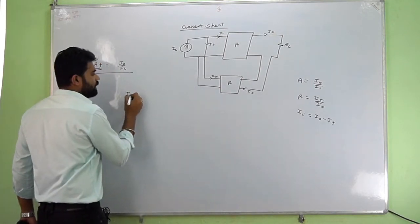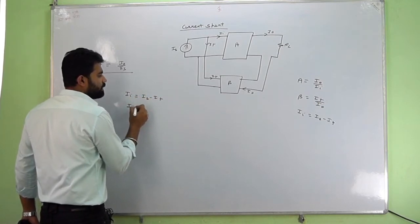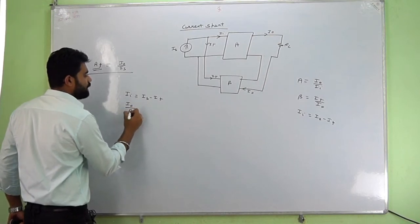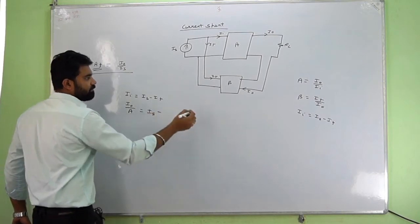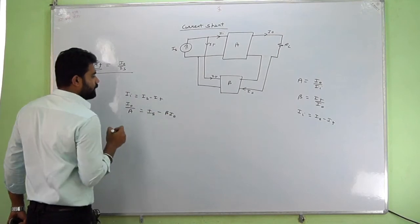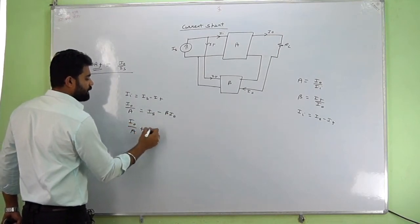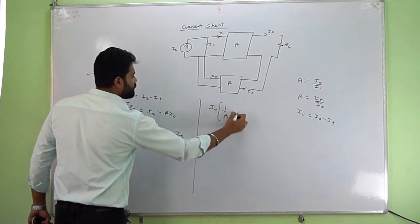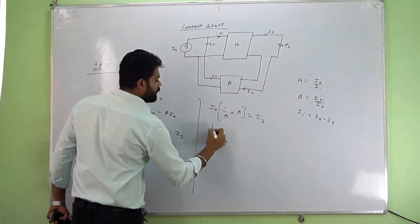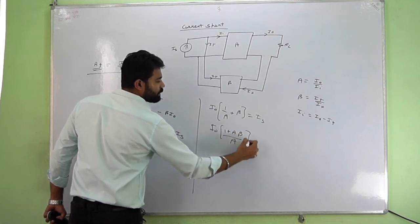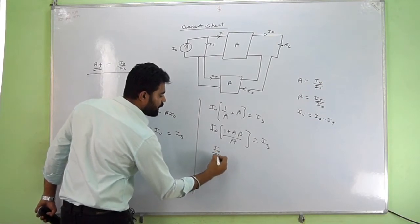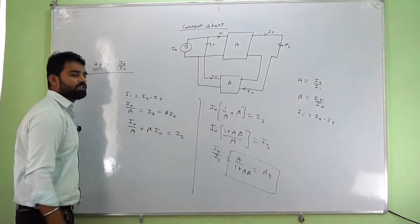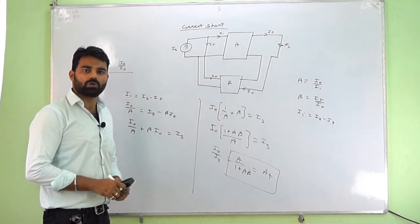We'll start with the equation II equal to IS minus IF. II can be replaced as I-naught upon A, equal to IS minus IF. IF can be replaced by beta times I-naught. So I-naught over A plus beta times I-naught equals IS. Taking I-naught common: I-naught times (1 plus A·beta) over A equals IS. Therefore AF equals I-naught upon IS equals A upon (1 plus A·beta). This is the basic derivation for AF from the block diagram.